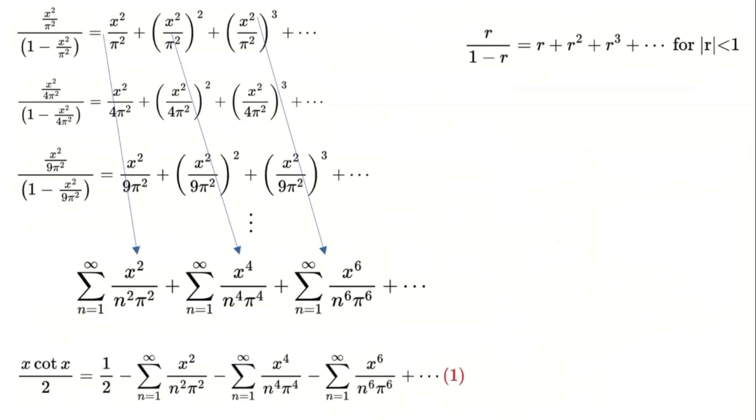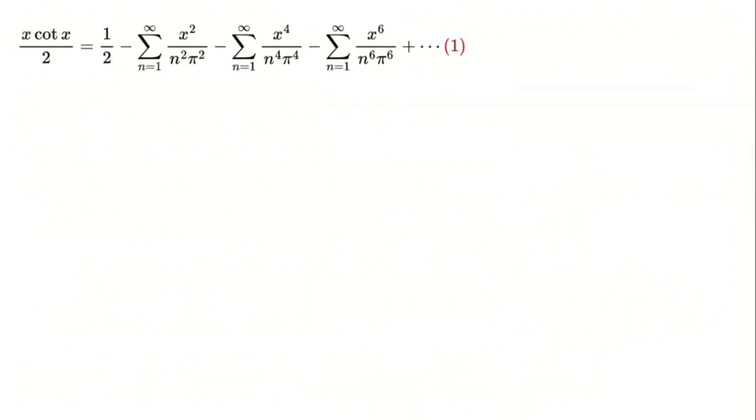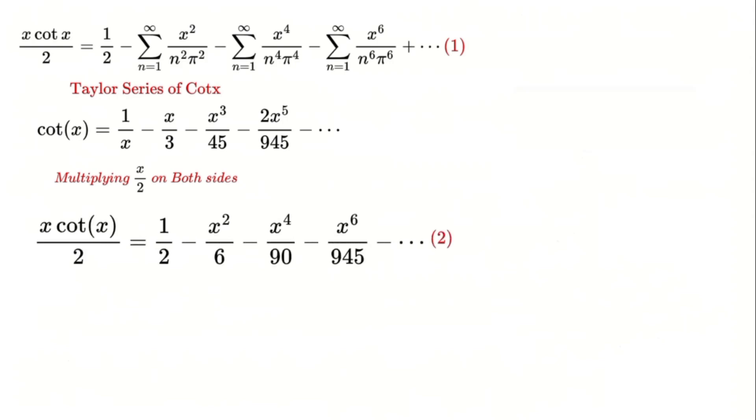Now let's bring in another infinite series expansion for cotangent, which equals 1 over x minus x over 3 and so on. Multiplying this series by x over 2, as before, gives us another equation. Let's call this equation 2.